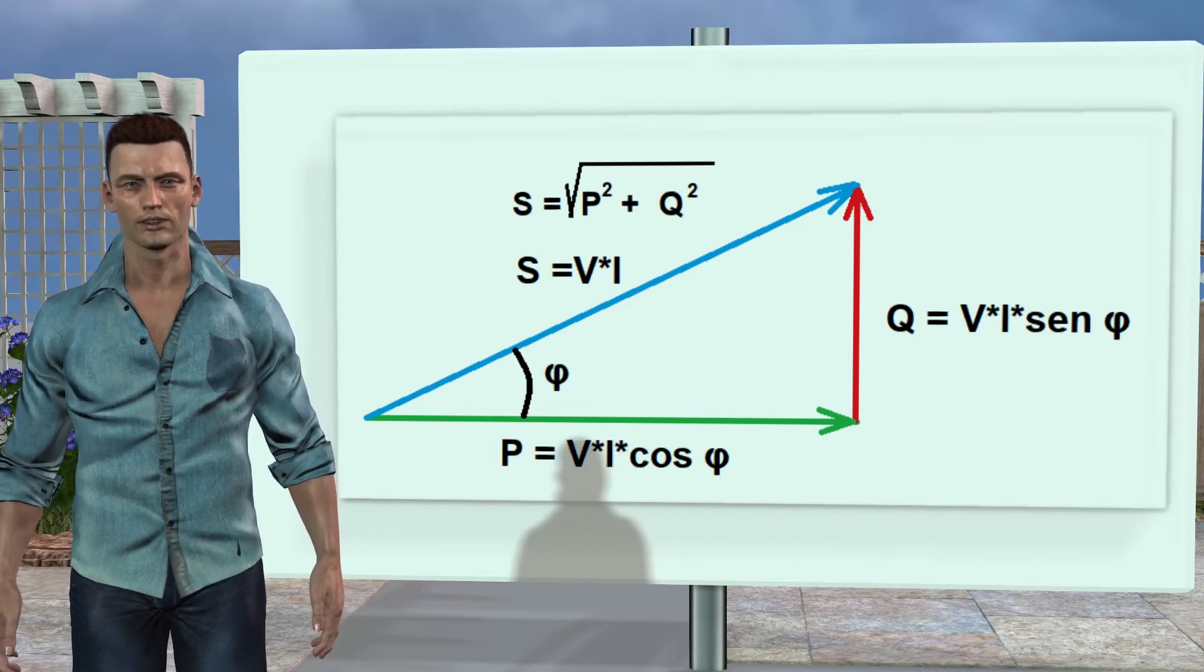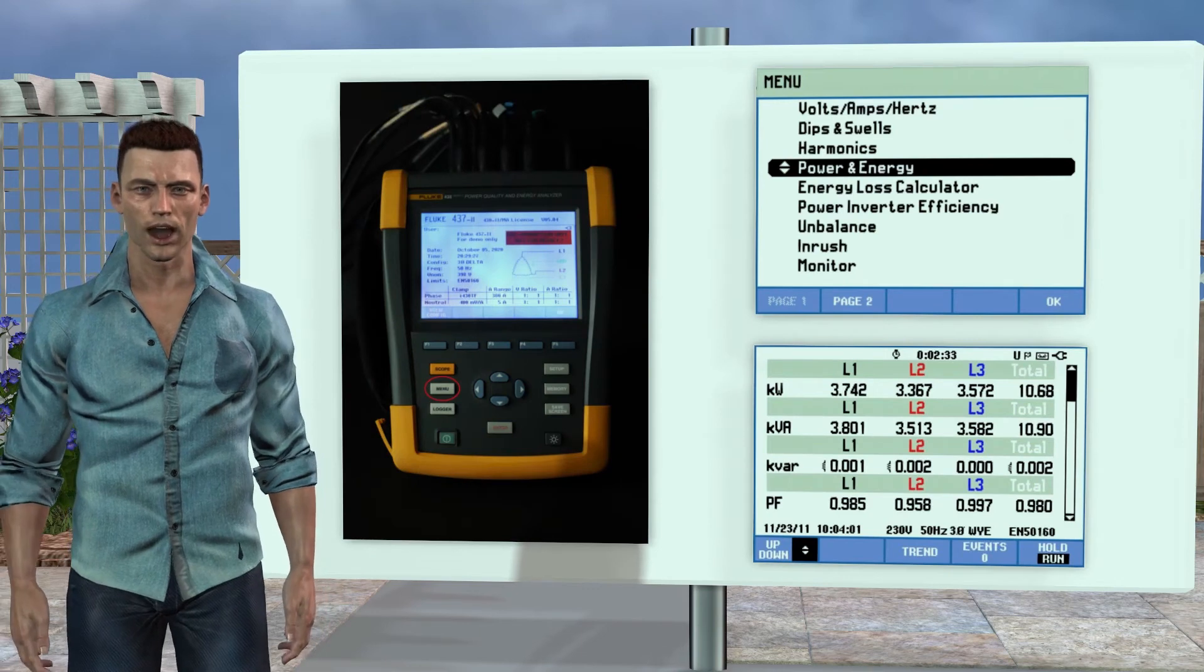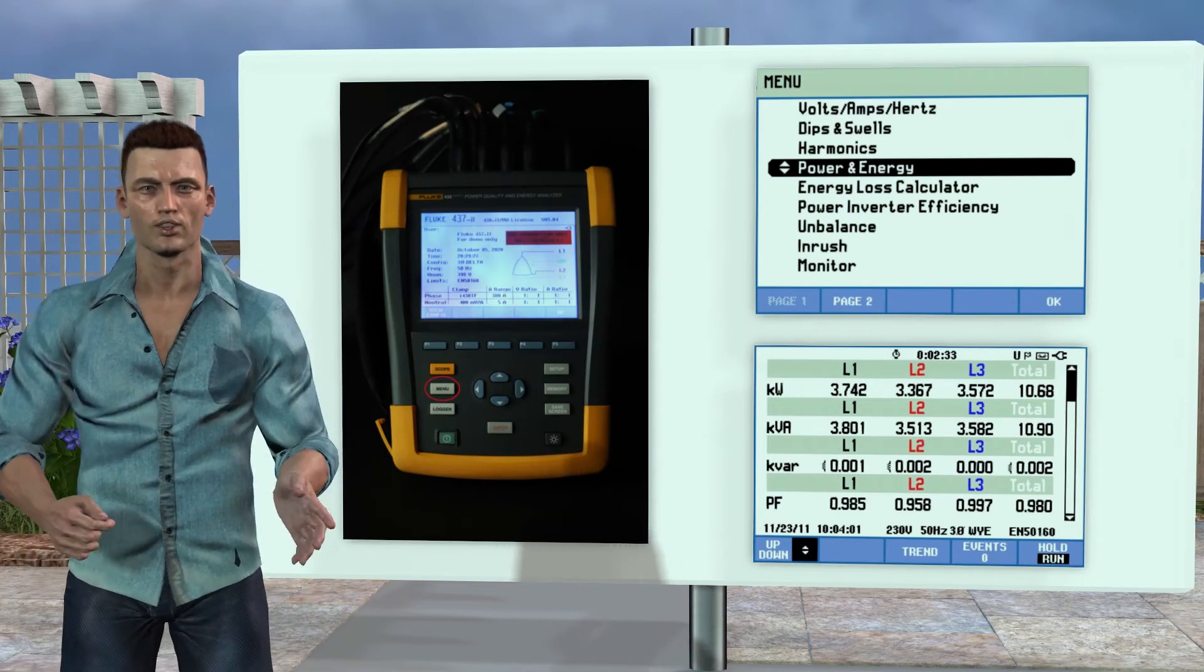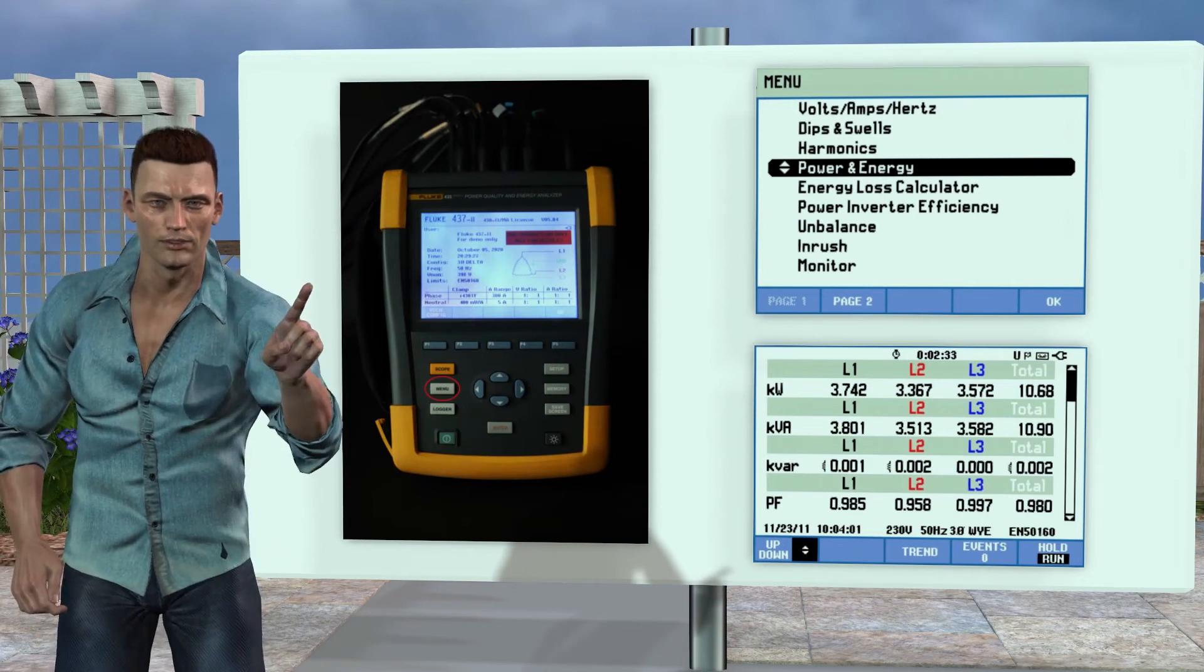Measuring these powers and energies with the Fluke 435 power quality analyzer is very easy. We simply press the menu key and select the power and energy function.